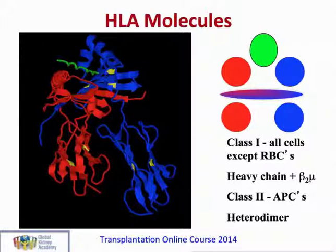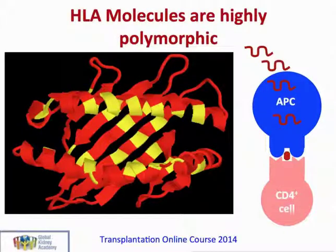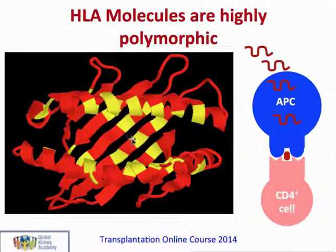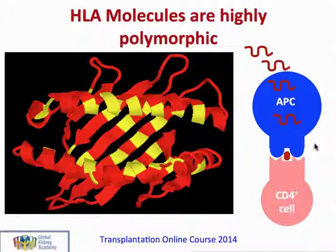Later studies showed that the real role of these HLA molecules was to present peptides as part of the normal immune process. In fact, HLA molecules are very polymorphic, meaning there is a lot of genetic variation between individuals, particularly in the areas on the upward facing helices and in the groove area where peptides are normally bound. The normal function of these molecules is to sit on the surface of antigen presenting cells and present foreign peptides to CD4 T cells, such as in infections with viruses or with tumours.